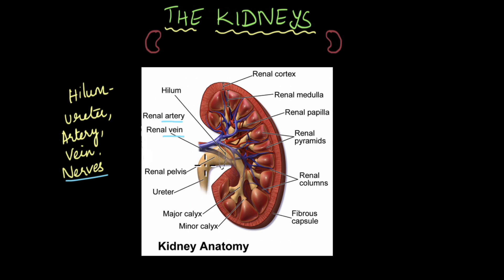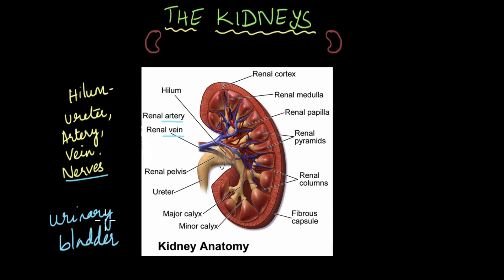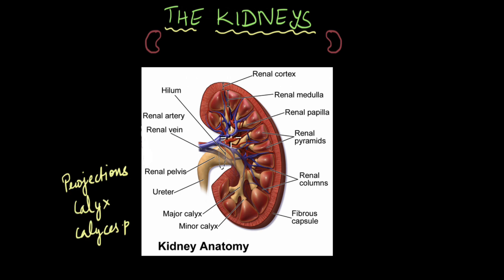It is through the hilum that the ureter emerges out of the kidneys. The ureter is the tube that connects the kidneys to the urinary bladder, which is the structure that stores urine until it can be voided. When you look at the anatomy of the kidney, you see that the hilum sort of opens into a larger space, known as the renal pelvis.